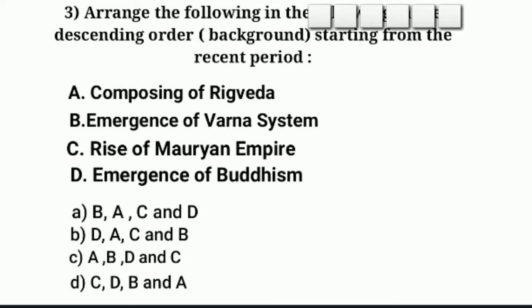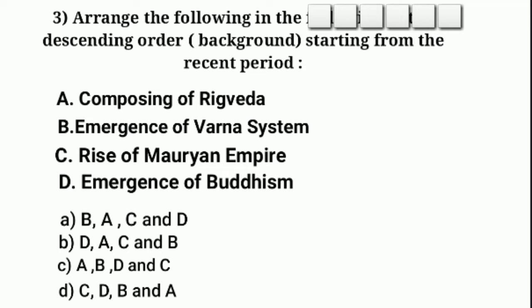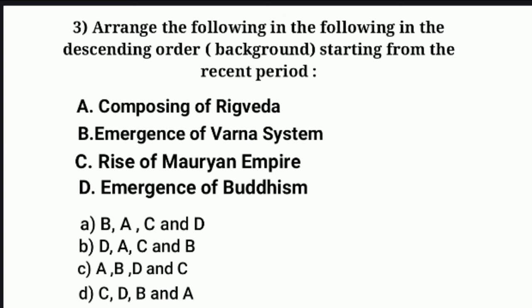Arrange the following in descending order starting from the most recent period. If you are talking about chronology, this is a history question. The options are: A — Composing of Rigveda, B — Emergence of Varna system, C — Rise of Mauryan Empire, and D — Emergence of Buddhism. The rise of Maurya is about 300 BC. The emergence of Buddhism is about 500 BC, then before that the emergence of Varna system, and the last is composing of Rigveda. So the answer option is D, C, B, and A.